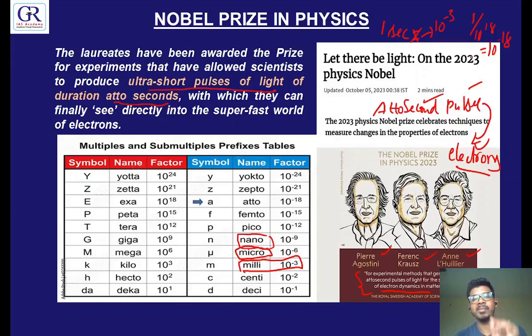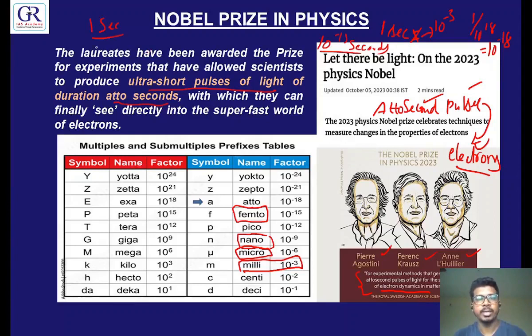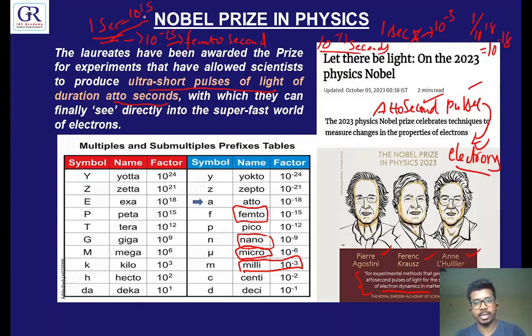These people, using their smartness, were able to produce attosecond pulses. Why did they produce attoseconds? Because we already had technology up to femtoseconds — we could produce light pulses of a duration of 10 to the power of minus 15 seconds. Imagine a heartbeat — a heart takes 1 second to beat on average. One second has 10 to the power of 15 femtoseconds — that many femtoseconds fit in just one second. But even with femtoseconds, we could not observe electrons, because electrons are that much fast in their movement. So now scientists produced attosecond pulses. Using attoseconds, we can study the electrons.